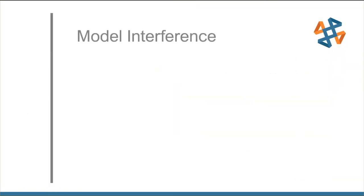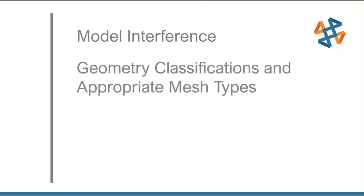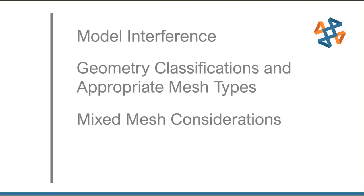Here's where we want to go: I want to talk about some housekeeping with regards to the models — specifically model interference and why you do not want to have that when using SOLIDWORKS Simulation or any FEA software. We'll talk about different geometry classifications and appropriate mesh types, look at each classification individually, then use them all together. And finally, new for 2020 is something that SOLIDWORKS calls a hybrid mesh.